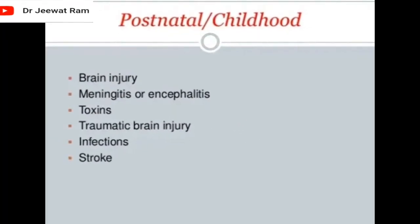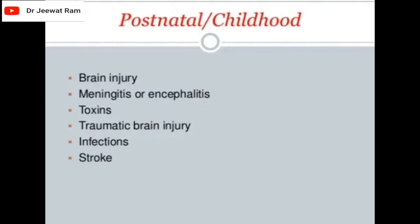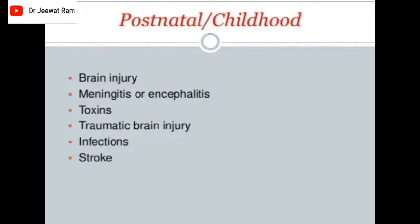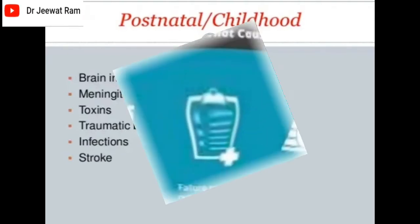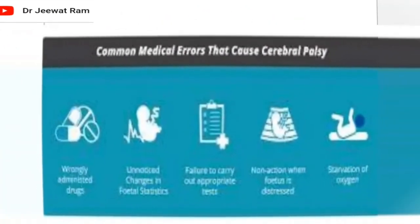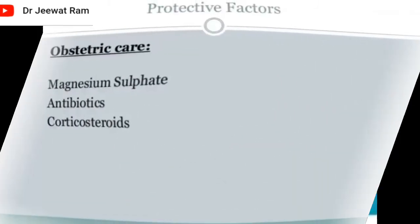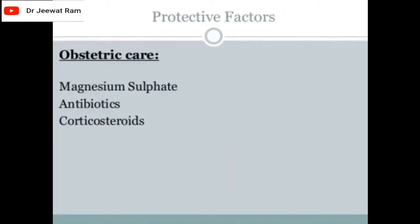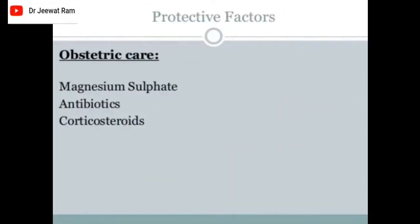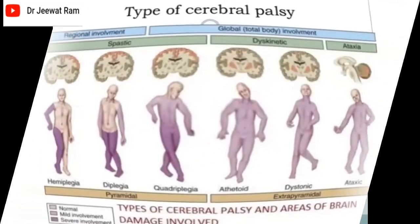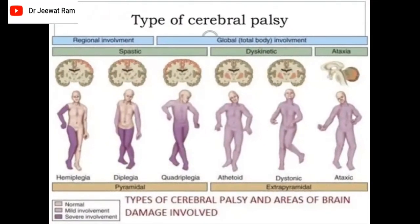Postnatal or childhood causes include brain injury, meningitis or encephalitis, toxins, traumatic brain injury, infections, and stroke. Protective factors include obstetric care, magnesium sulfate, antibiotics, and corticosteroids.